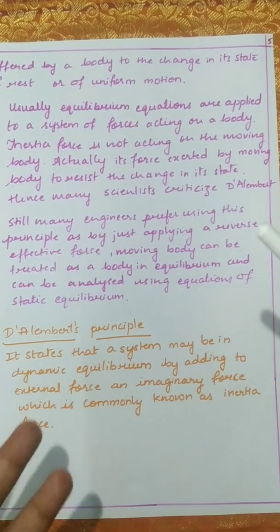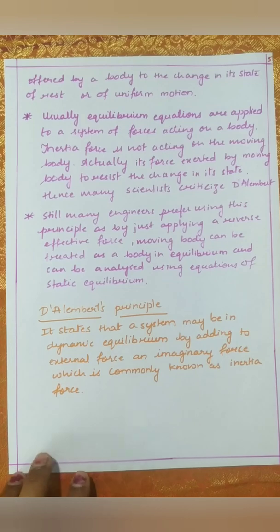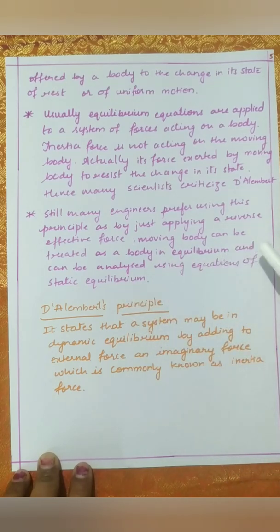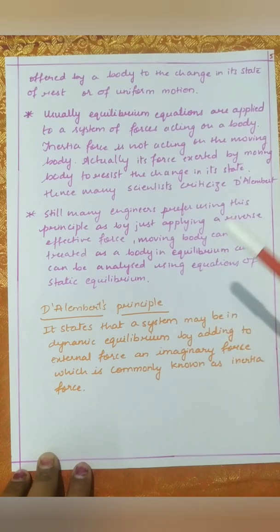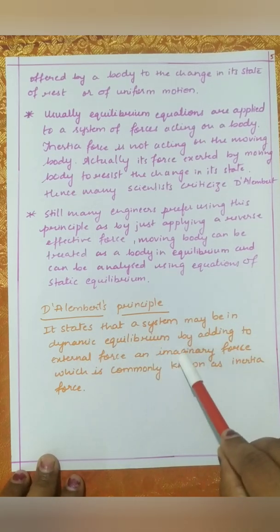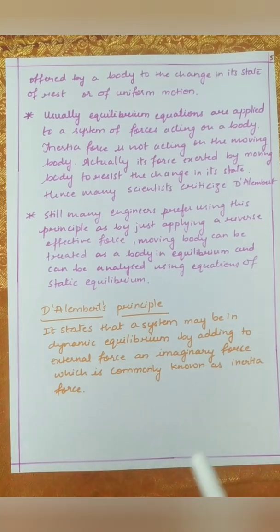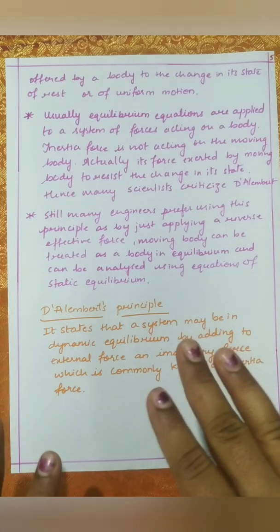Many scientists have criticized D'Alembert for this. However, many engineers prefer using this principle because by applying a reverse effective force, the moving body can be treated as a body in equilibrium and solved using equations of static equilibrium — it becomes very simple and easy. The principle can also be stated as: a system may be in dynamic equilibrium by adding to the external forces an imaginary force, commonly known as the inertia force.